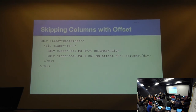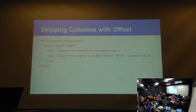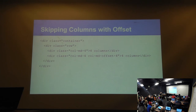You can skip columns using offset. Sometimes you want a column, then nothing, then another column — use the offset class. The way to do it cleanly is to have a column and add the offset: col-md-offset-4. What that says is, assume there's a four-column gap before me. It's a way to create white space between columns without inserting blank columns.